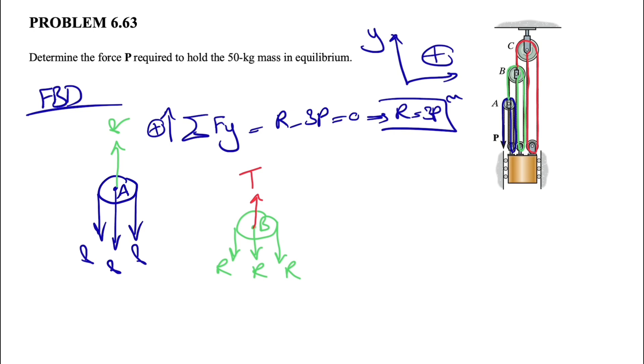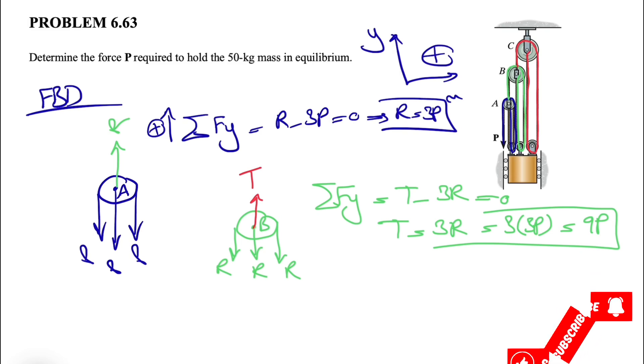If we do the same thing, we'll do the sum of all forces in Y direction. This time, we'll have T minus 3R equals 0, which means T equals 3R. We already know R is 3P, so we have 3 times 3P. And there is one more pulley left. Now that we have this, we know what's the tension in R and what's the tension in T. We found all of them based on P.